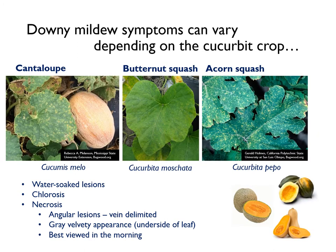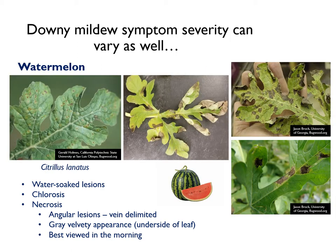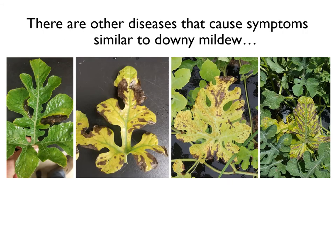Downy mildew symptoms can vary with different cucurbits. Symptoms on cantaloupe and squash tend to start as small pinpoint lesions that may expand following leaf venation. Downy mildew symptoms can even vary on a host. On watermelon, lesions can vary from pinpoint lesions to even larger blotches.